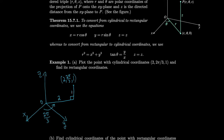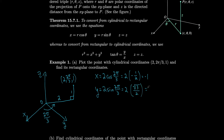Converting to rectangular: x = r cosθ = 2 cos(2π/3) = 2 × (−1/2) = −1. Then y = 2 sin(2π/3) = 2 × (√3/2) = √3. And z is still 1 — it doesn't change. So we end up with the point (−1, √3, 1) in rectangular (Cartesian) coordinates.